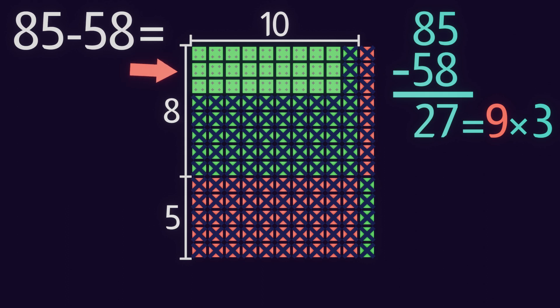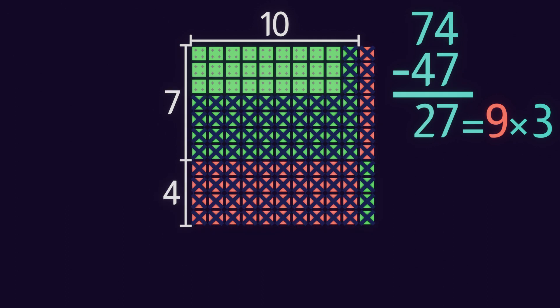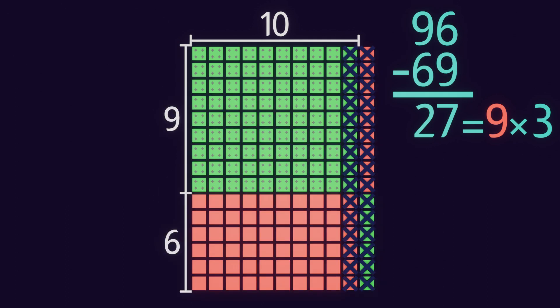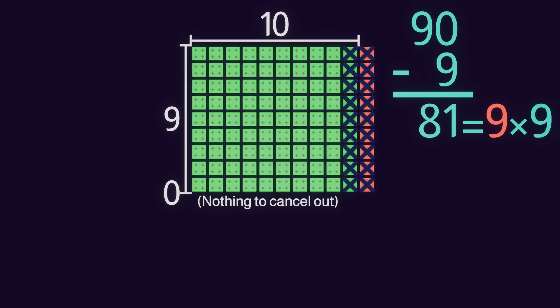Other examples: here's 74 minus 47, 96 minus 69, 21 minus 12, and 90 minus 9.